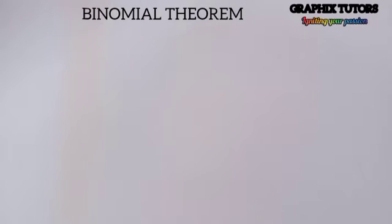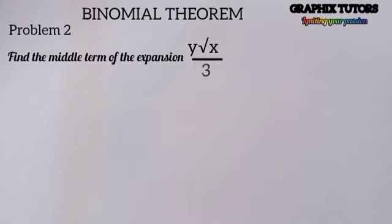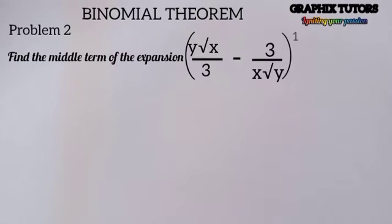Good everyone, my name is Graphics. Today we want to solve a problem in the Binomial Theorem where we are told to find the middle term of the expansion: y multiplied by the square root of x, all divided by 3, minus 3 divided by x times the square root of y, all raised to the power of 16.